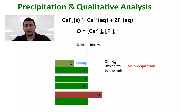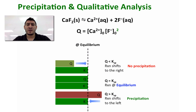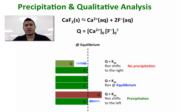If Q is equal to Ksp, the reaction is at equilibrium — the solid can form but also the solid can dissolve. If Q is greater than Ksp, the reaction will shift to the left and this is when precipitation occurs. So if you are mixing two solutions and you want to know ahead of time if precipitation will form or not, you can simply calculate the reaction quotient Q and compare it to the Ksp.